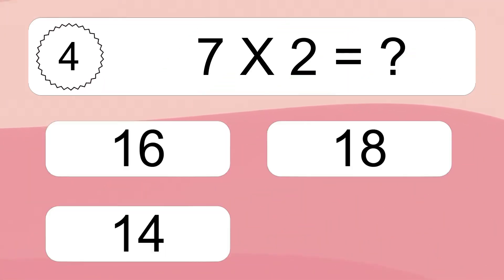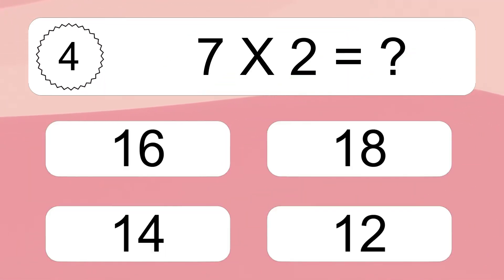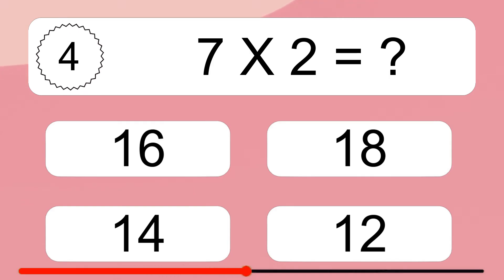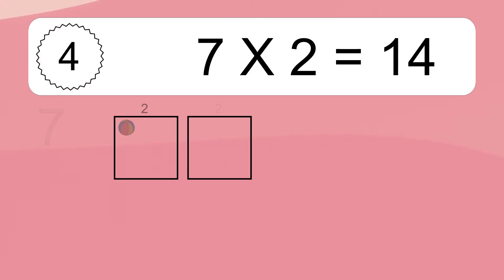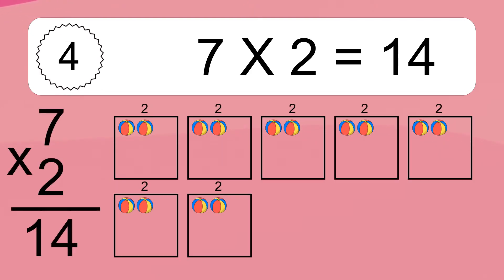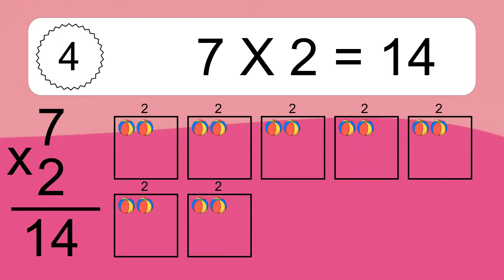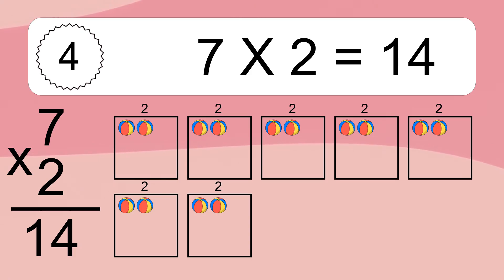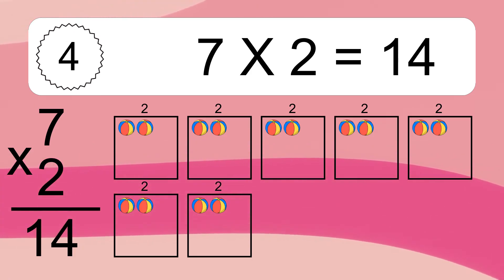7 times 2 equals what? 7 times 2 equals 14. We have 7 boxes, and each box has 2 colorful balls inside. If you count all the balls in all the boxes together, you will have 7 times 2 balls. This equals 14 balls.